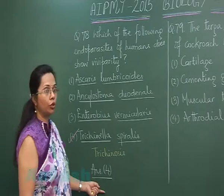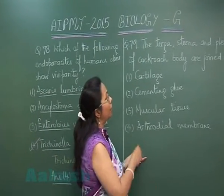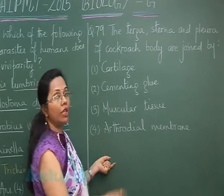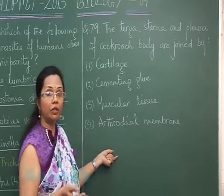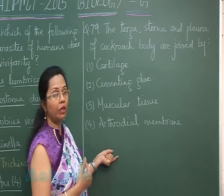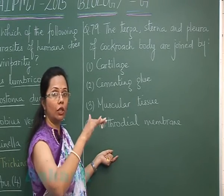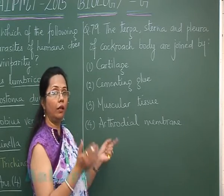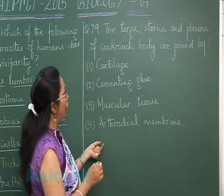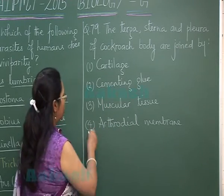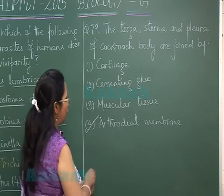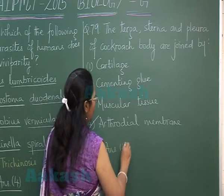Moving on to question 79: The terga, sterna, and pleura of the cockroach body — these three are the sclerites covering the segments of the cockroach. Each thoracic and abdominal segment is covered by 4 sclerites: dorsal tergum, ventral sternum, and on the lateral sides, pleura. These are joined by the arthrodial membrane, also called the articular membrane. So the answer is option 4.